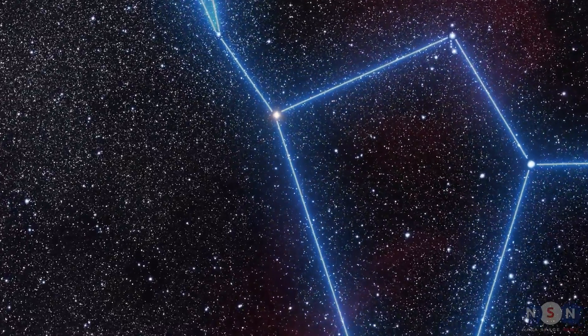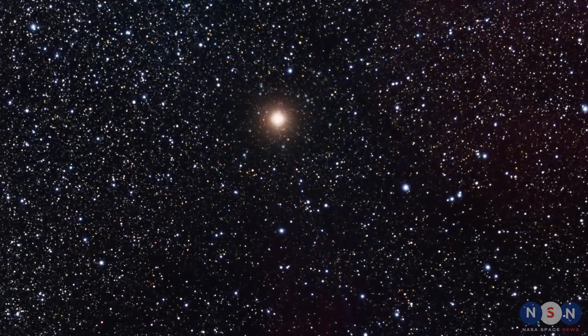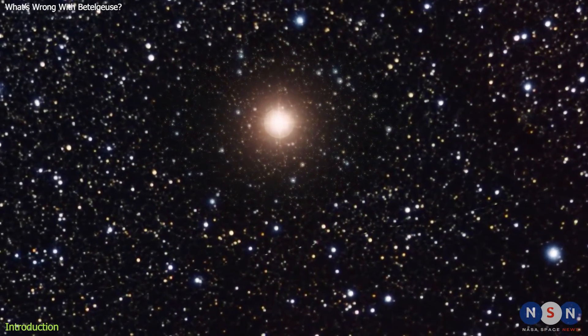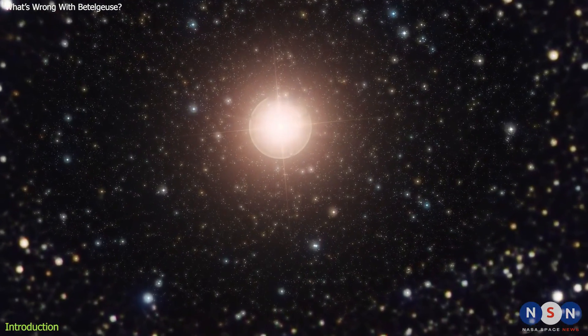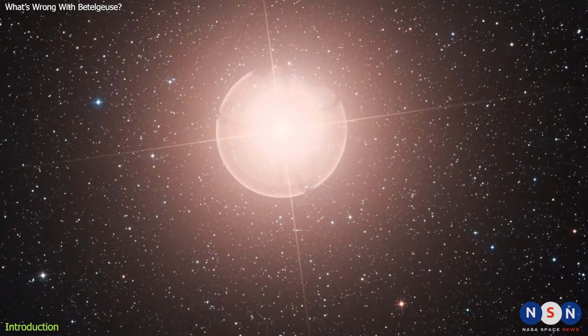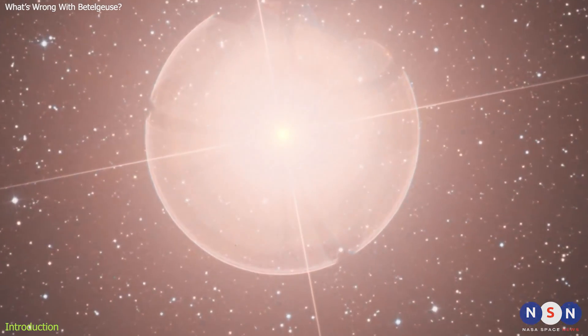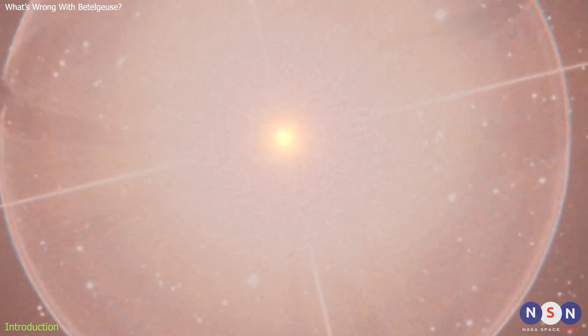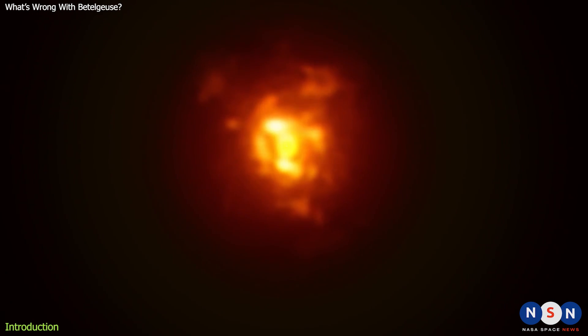There's something strange happening in the sky. One of the stars we see every night is behaving in a way we've never seen before. And it's not just any star. It's a red giant about to die. In this episode, we'll be discussing recent news that has challenged our understanding of stellar evolution.